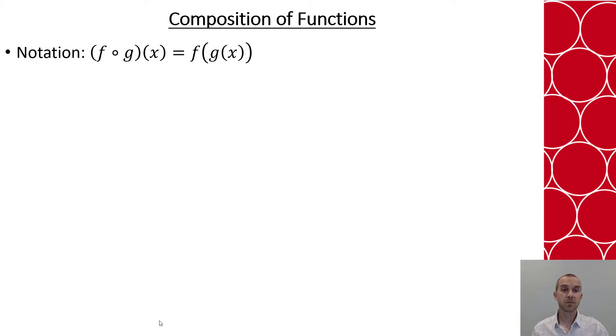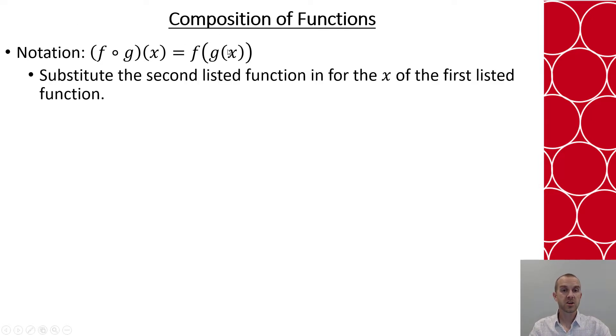Last thing I'll talk about is the composition of functions. This uses an open dot versus if it's a solid dot, that means multiplication. The open dot means that is a composition of functions. And what that's saying is I'm going to take the second function listed and input it as the x value for the first function listed. So this is f of g of x. That's how you would say it.